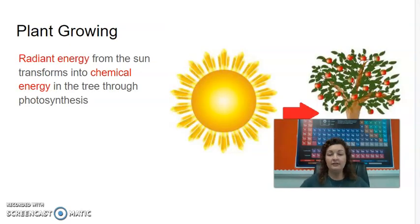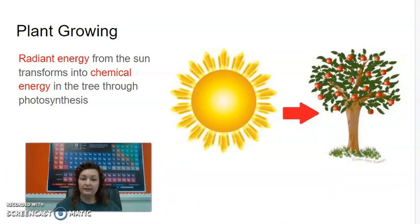So if I'm asking you to do a plant growing, well, plants get their energy from the sun, right? Sunshine. So radiant energy, which is light energy, comes from the sun and it's transformed into chemical energy in a tree through photosynthesis. That's how a tree eats, right?